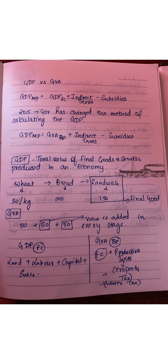We have basic price and indirect taxes minus subsidies in the middle. GDP — Gross Domestic Product — is the total value of final goods and services produced in a country in one year. The word 'final' is very important here.